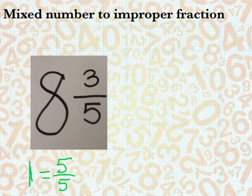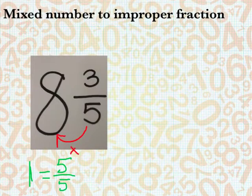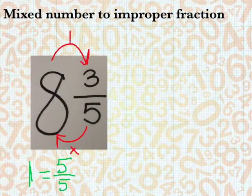And that is important, because that's the reason the method I'm about to teach you works. To change this mixed number into an improper fraction, we do what I call the bottom times the big plus the top over the bottom.